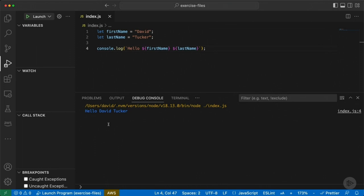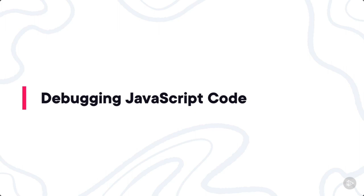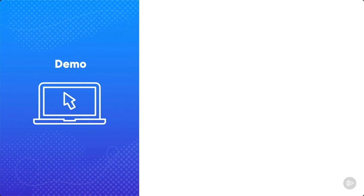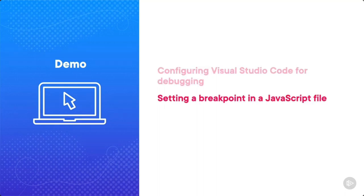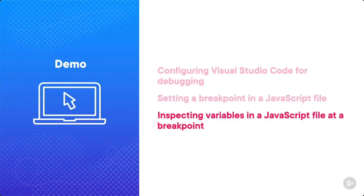But you can do more than just this. In the next clip, I want to show you how to do basic debugging of your JavaScript code — a skill that will be essential if you spend time as a JavaScript developer, and one I believe will prove essential as you work through this course. We're going to be configuring Visual Studio Code for debugging, looking at how to set breakpoints within a JavaScript file, and inspecting variables at a specific breakpoint.